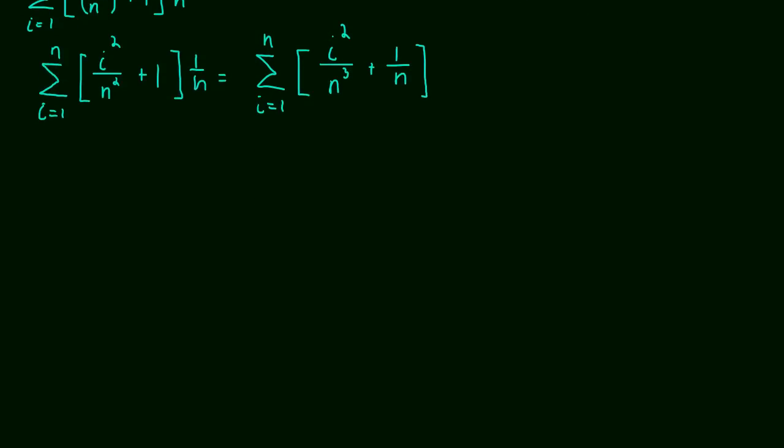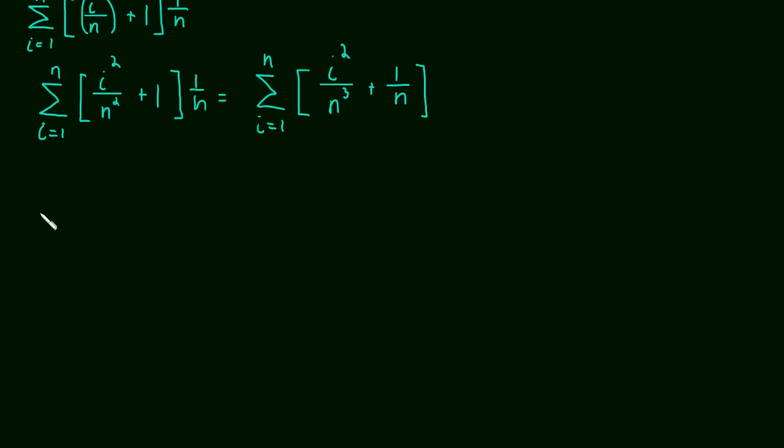and now let's break that up into two sums. So again, this is just the algebra of sums that we're doing. And this part is really the easy part. We already figured out the right formulas and everything, so now we're just doing a little bit of algebra here. So this is i squared over n cubed plus the sum as i goes from 1 to n of 1 over n.